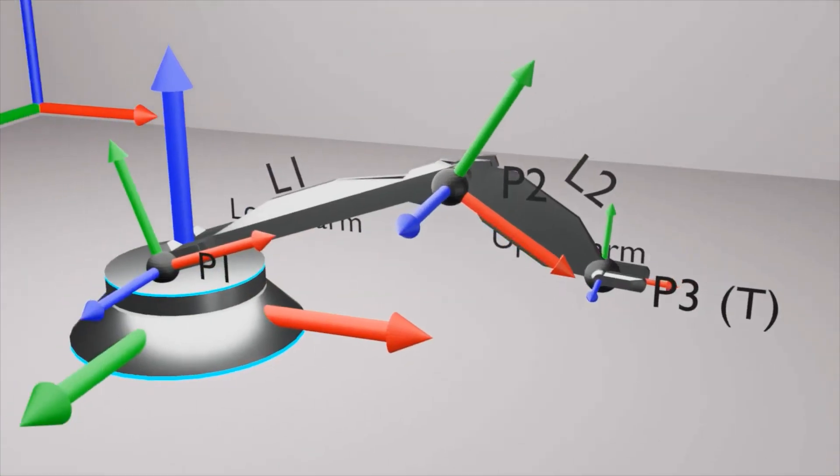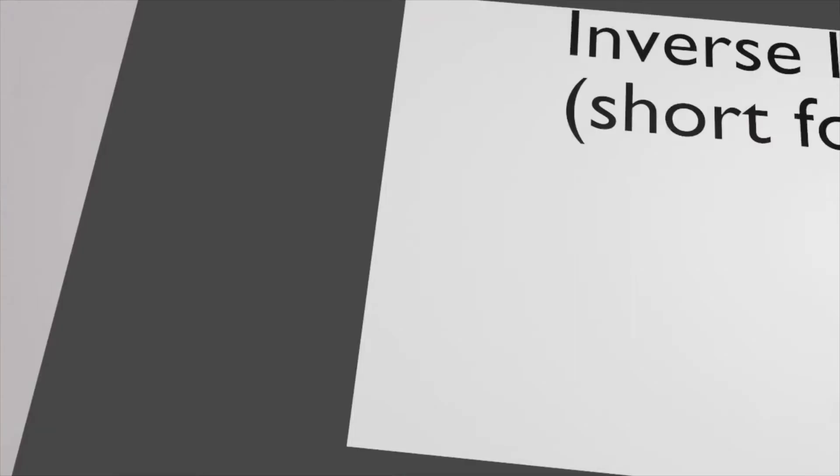On the contrary, if the point p3 is known, then p1 and p2 can be calculated. In other words, if the position and orientation of the tool t are known, one can calculate the positions and orientations of upper arm l1 and lower arm l2. This process of calculation is called as inverse kinematics IK.